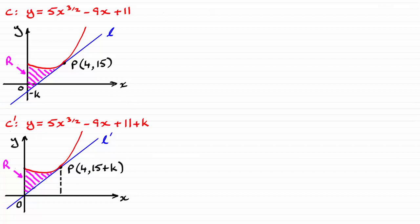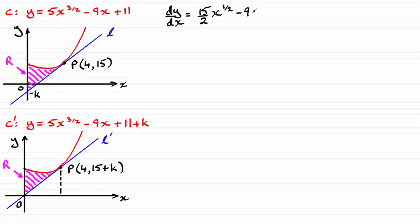So let's start by differentiating the curve in the usual way. That will give us the gradient at any point on the curve. So dy/dx equals — differentiating 5x to the power 3 over 2 — it would be 5 times the power 3 over 2, that gives us 15 over 2, and then reduce the power by 1, so that's down to the power of a half. For the minus 9x, that differentiates to minus 9, and the constant goes to 0.